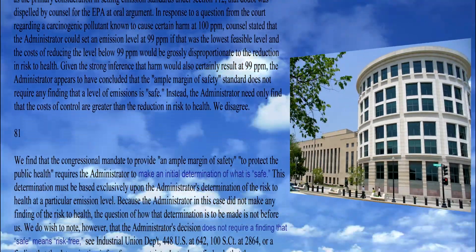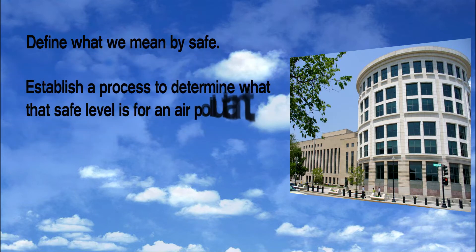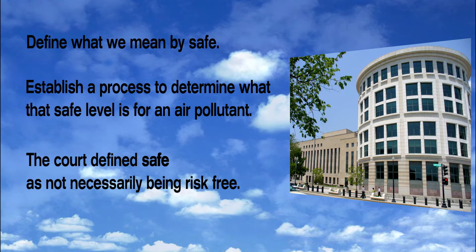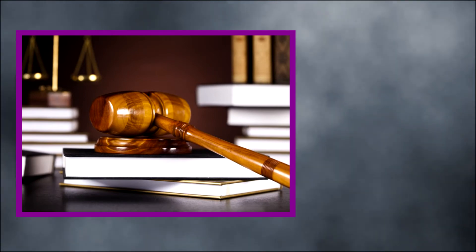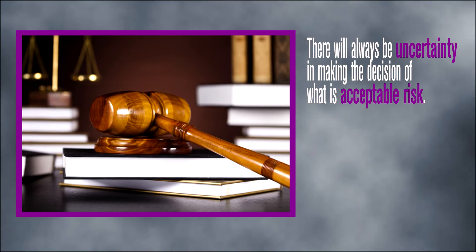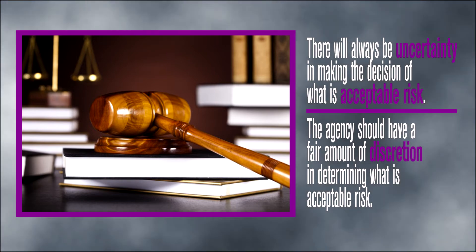To address the issue of setting a rule on ample margin of safety where there may not be a risk-free level of exposure, the District of Columbia Circuit Court suggested EPA follow a two-step process. Step 1: define what we mean by safe and establish a process to determine what that safe level is for an air pollutant. The court defines safe as not necessarily being risk-free, morphing this definition into meaning an acceptable level of risk given a particular activity — in this case, emission of HAPs. This decision was based on human health. The court also noted there will always be uncertainty in making this decision, and the agency should have a fair amount of discretion in determining what acceptable risk is.